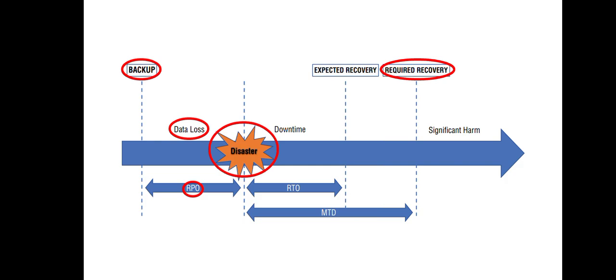After a disaster has occurred, there would be a certain time period after which there would be significant harm to your business if the system or the critical business functions are not available. This maximum time is called Maximum Tolerable Downtime, and an organization has to plan the recovery of related IT systems supporting this critical business function before that time.